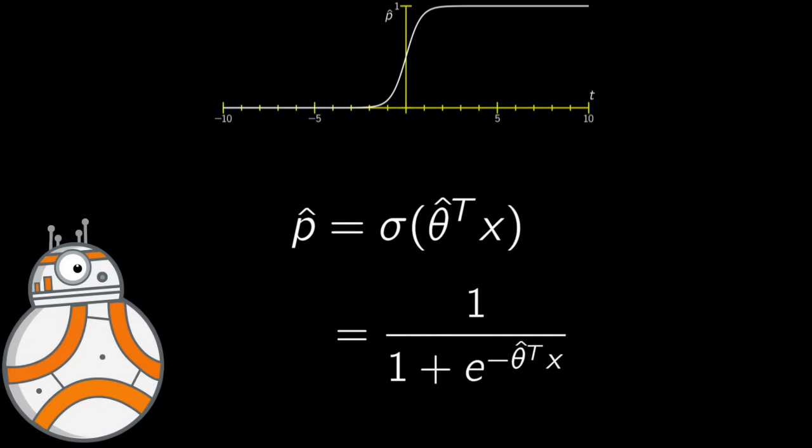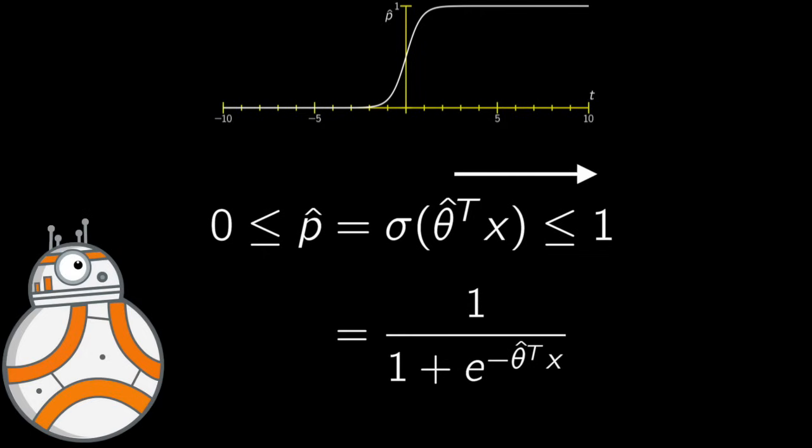It outputs a number between zero and one, thus a probability. So the higher the input is, the probability goes to one, and the lower it is, it goes to zero. Midway, when the input is zero, means you have a probability of 0.5.